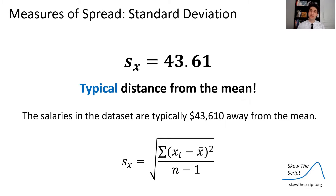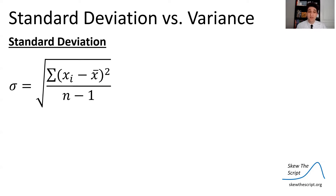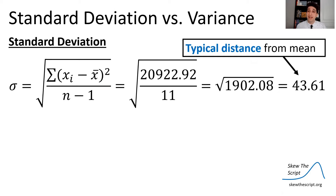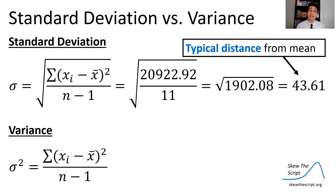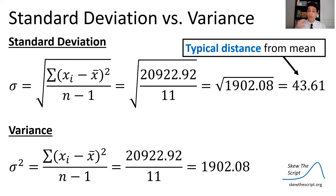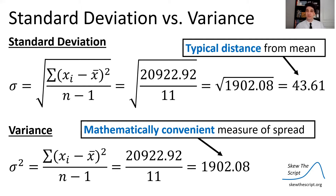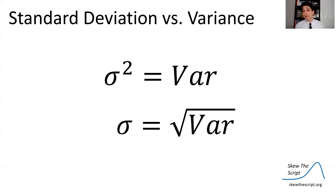There's another closely related measure of spread: variance. Variance is standard deviation except you never square root at the end — you keep the squared differences. In other words, it's the standard deviation squared. That gives you a mathematically convenient measure of spread, though it's not as interpretable as standard deviation. To convert: square the standard deviation to get variance, or square root the variance to get standard deviation.